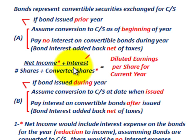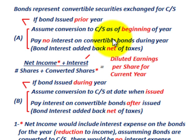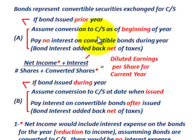The bonds represent convertible securities exchanged for common stock. If the bond is issued in a prior year and we're trying to figure out the diluted effect for the current year, we assume the conversion to common stock as of the beginning of the year. When we assume the bond is converted to common stock at the beginning of the year, you also assume there would be no interest paid on those convertible bonds during the year, so the bond interest would have to be added back net of taxes.